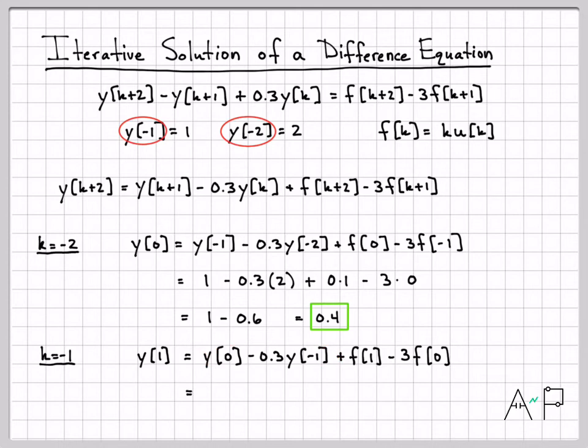Let's go ahead and plug in: Y of zero was 0.4 minus 0.3 Y of minus one was equal to one plus... things get a little bit more interesting now, because finally I have some non-zero values for my input F at time one. If I look at my equation and replace the K with one, one times the unit step of one, the unit step at time one is one, one times one is one.